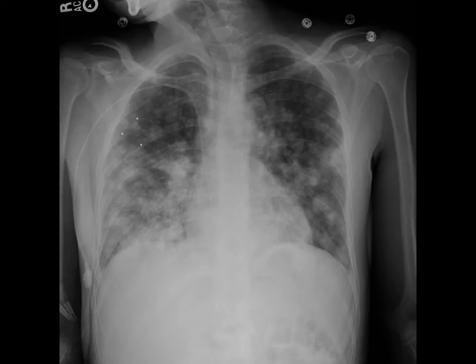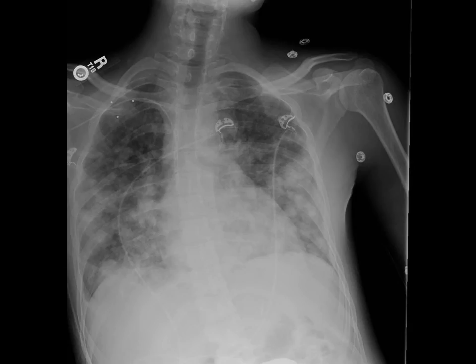A 22-year-old male admitted for metastatic testicular cancer had a PIC placed, and a few hours later began having PVCs with no prior history. On the chest film, the tip was seen terminating beyond the cavo-atrial junction, so it was recommended the PIC be pulled back. After pulling back, the tip was in the more appropriate position at the cavo-atrial junction, and the PVCs resolved — a case of arrhythmia caused by PIC placement.